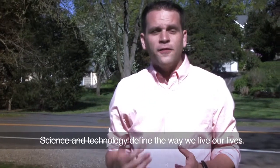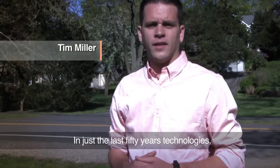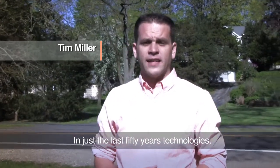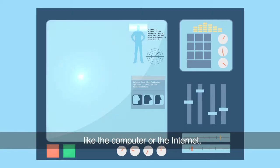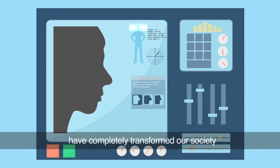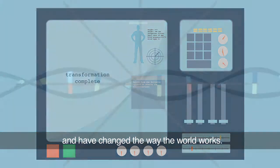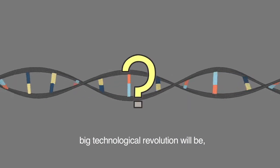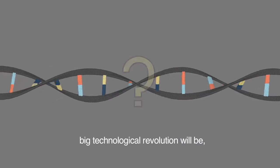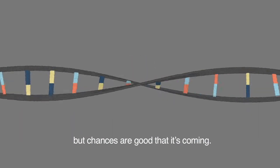Science and technology define the way we live our lives. In just the last 50 years, technologies like the computer or the internet have completely transformed our society and have changed the way the world works. No one knows for certain what the next big technological revolution will be, but chances are good that it's coming.